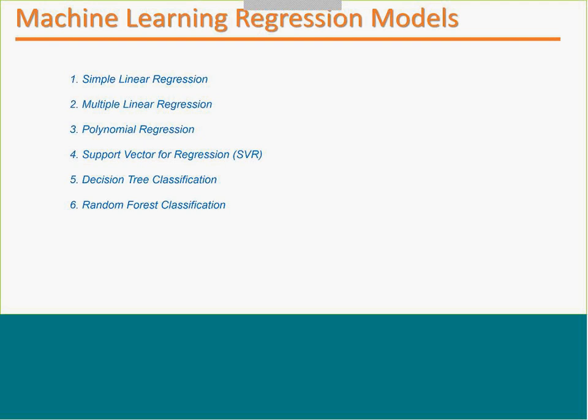What we are going to cover today is regression models. There are six types: simple linear regression, multiple linear regression, polynomial regression, support vector regression, decision tree regression, and random forest regression. We'll see all six types in the upcoming slides.